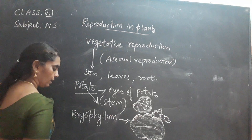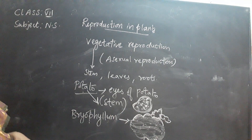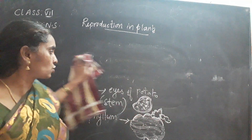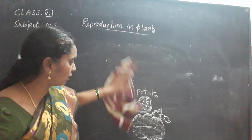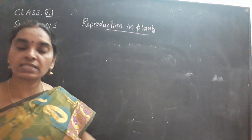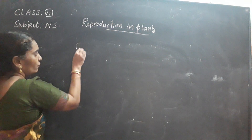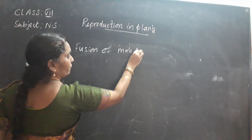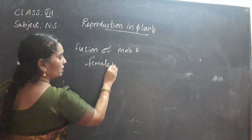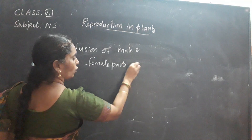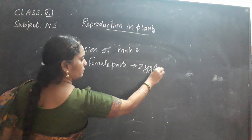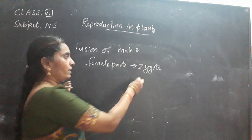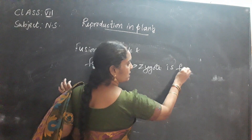The next question: 'Who am I? I am formed by the fusion of male and female gametes.' This is sexual reproduction. Sexual reproduction involves the fusion of male and female gametes. The fusion of male and female gametes results in the formation of a zygote. So the answer is: zygote.